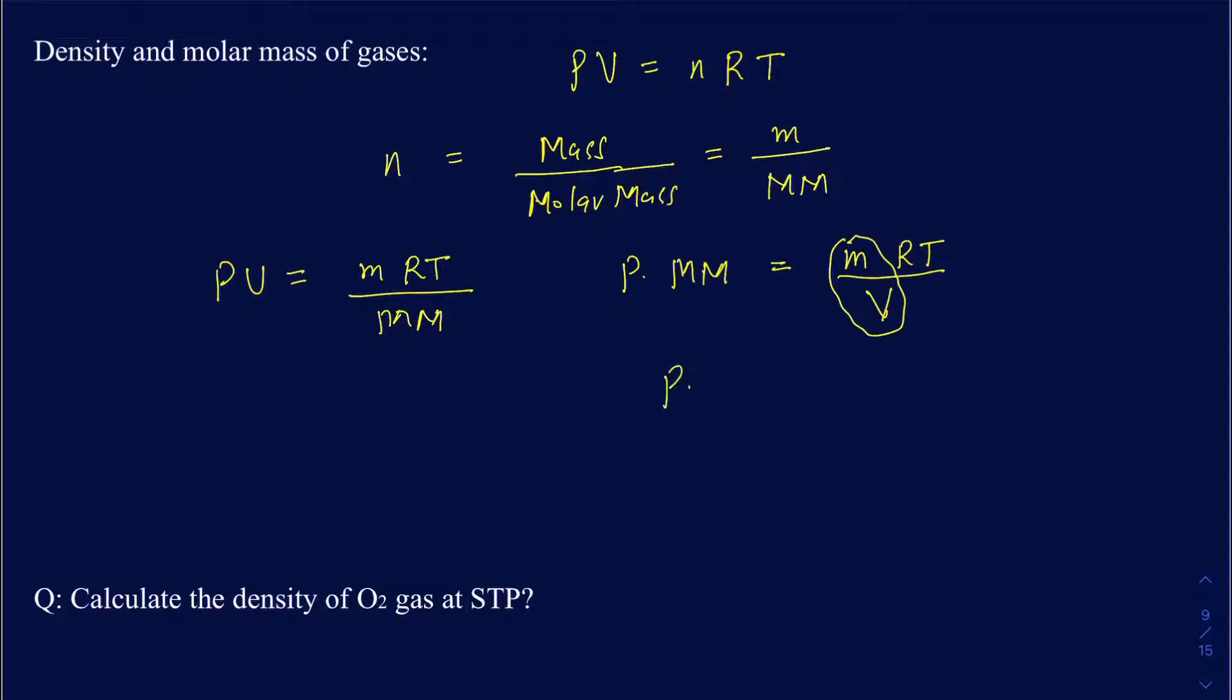So it's going to be P times MM equals density times RT. So I will say for the density, I'll say DRT. That's the final equation you're going to have.